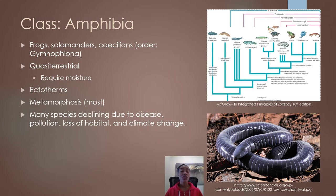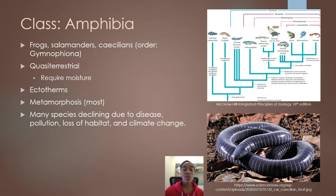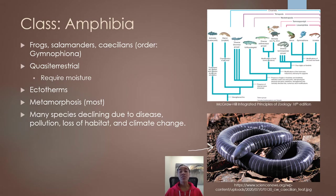Some of the first terrestrial tetrapods we find were the amphibians. Amphibians include modern-day frogs, salamanders, and caecilians. In this lecture we'll talk about frogs and salamanders in a lot more detail. We won't really talk much about caecilians, but they are a form of limbless amphibian. What amphibians are is basically in their name — their name boils down to 'double life,' and they're called this because even though they're terrestrial, they still require moisture in order to survive.